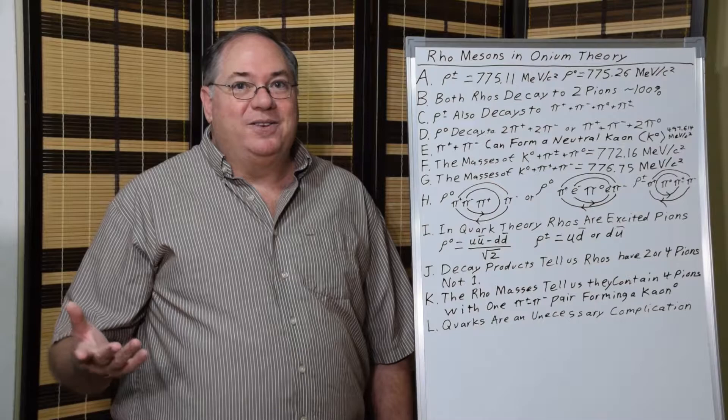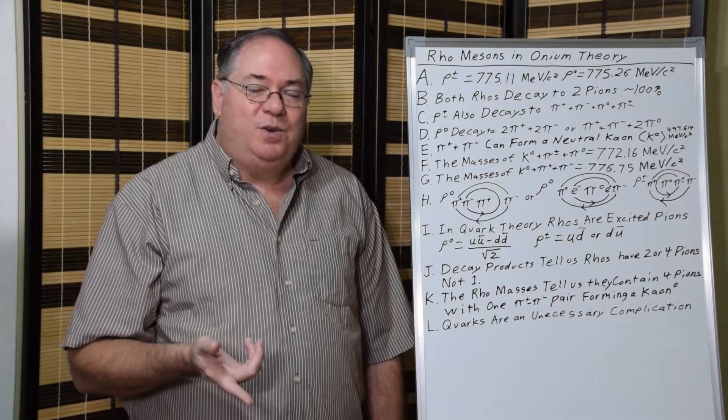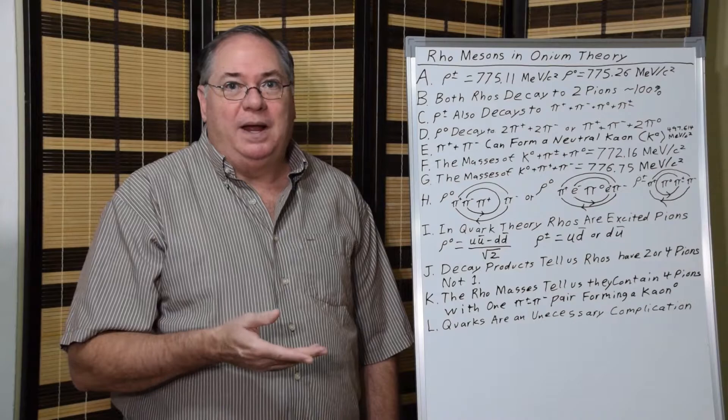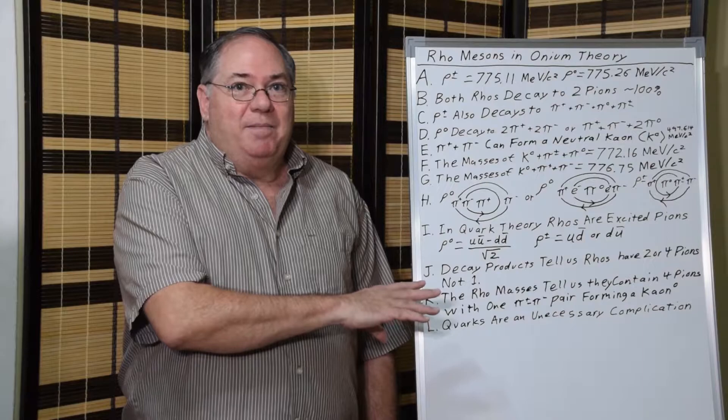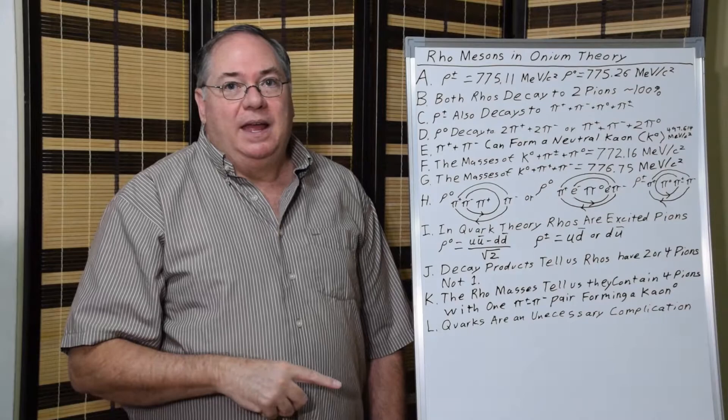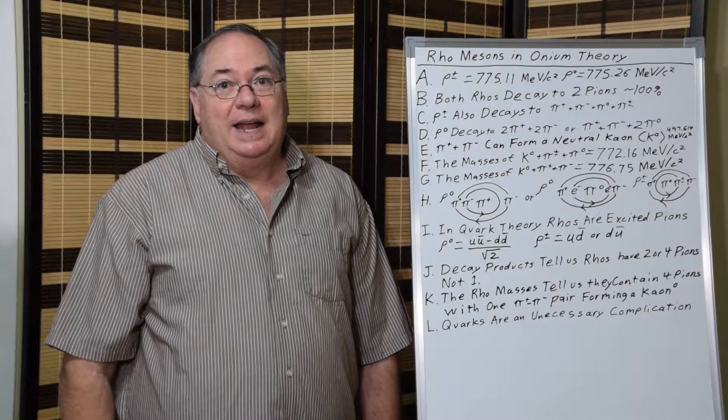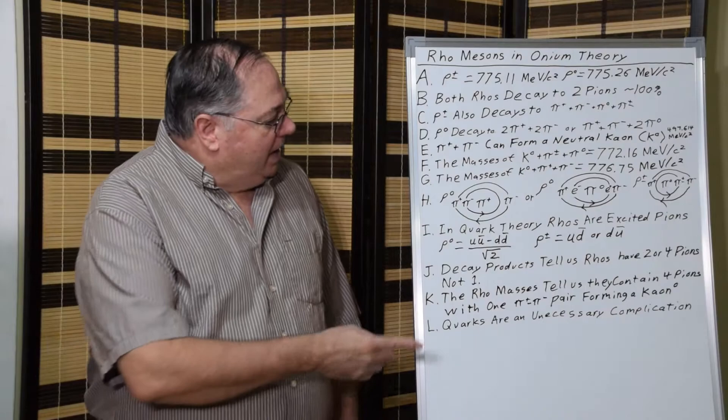It all fits together nice and neat without quarks. To summarize, we either have two or four pion decay, but we have plenty of reasons to believe that four pions is correct. Most particularly, the mass adds up to having four pions in this configuration, and quarks are completely unnecessary—an unnecessary complication to make things worse.